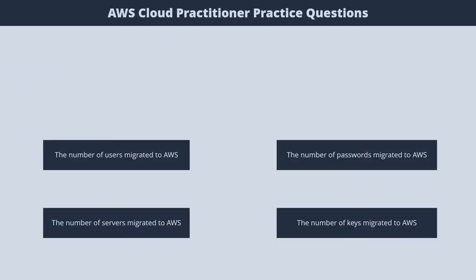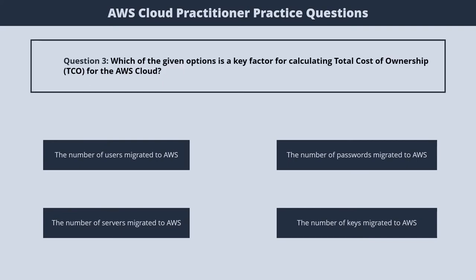Question 3. Which of the given options is a key factor for calculating total cost of ownership for the AWS Cloud? 1. The number of users migrated to AWS. 2. The number of passwords migrated to AWS. 3. The number of servers migrated to AWS. 4. Number of keys migrated to AWS. The correct answer is 3. The number of servers migrated to AWS.